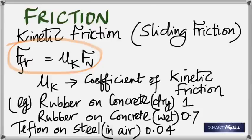Everybody's heard of non-stick pans. The material coated on them is Teflon, usually coated on steel. Teflon on steel exposed to air has a coefficient of friction of just 0.04 — almost no friction. That's why food does not stick.